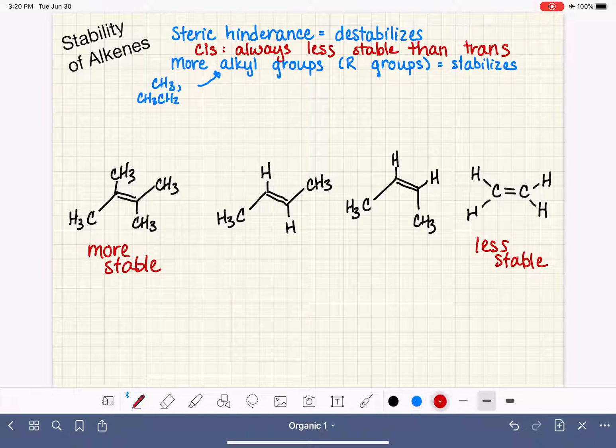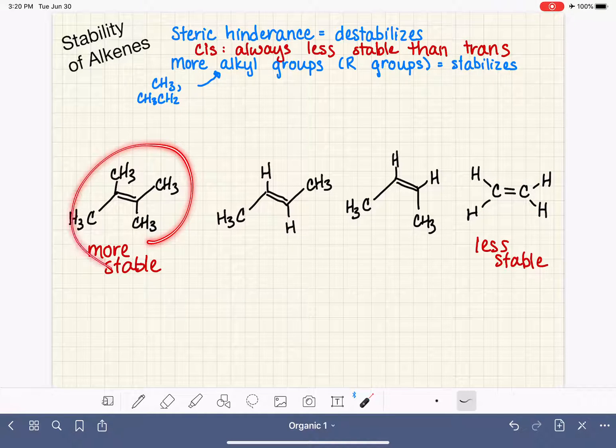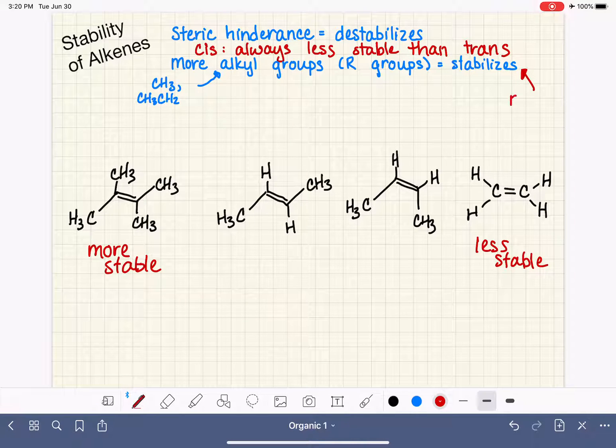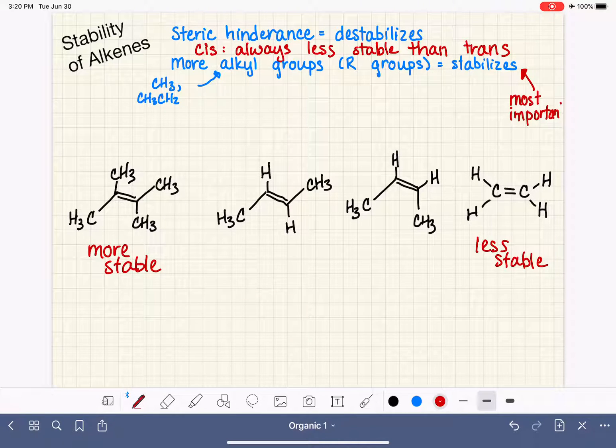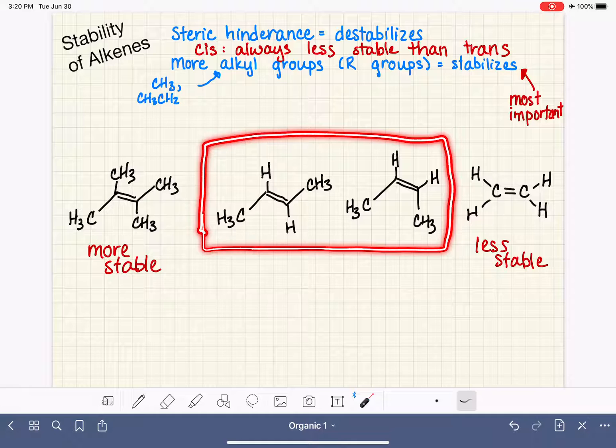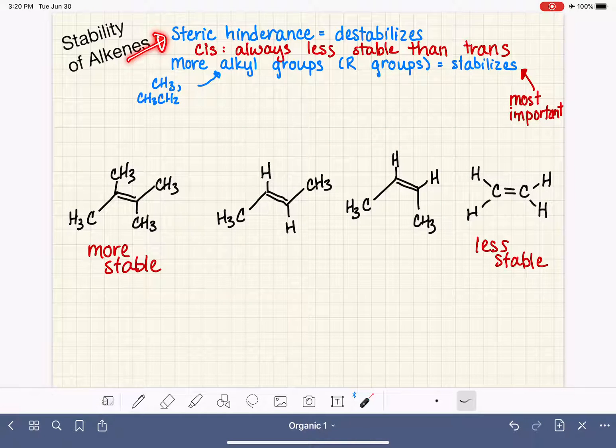Why might that be? This is something that's kind of counterintuitive because if we think about steric hindrance, this guy over here has literally no steric hindrance at all, and this guy has got the most steric hindrance. What we know is that the presence of alkyl groups is the most important factor in determining the stability of a molecule. And only when there is a tie in terms of the number of alkyl groups, only then do we turn to steric hindrance.